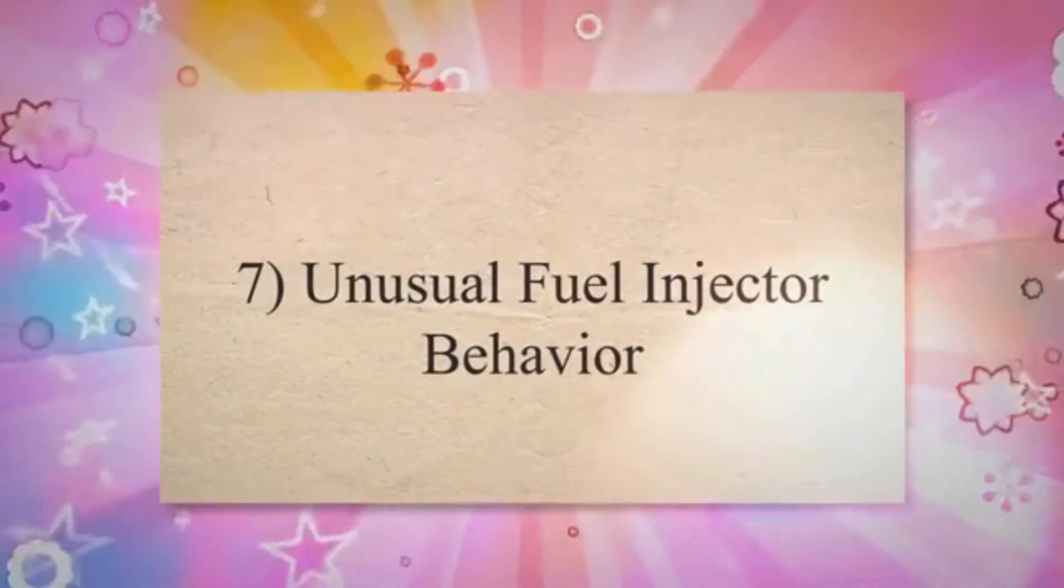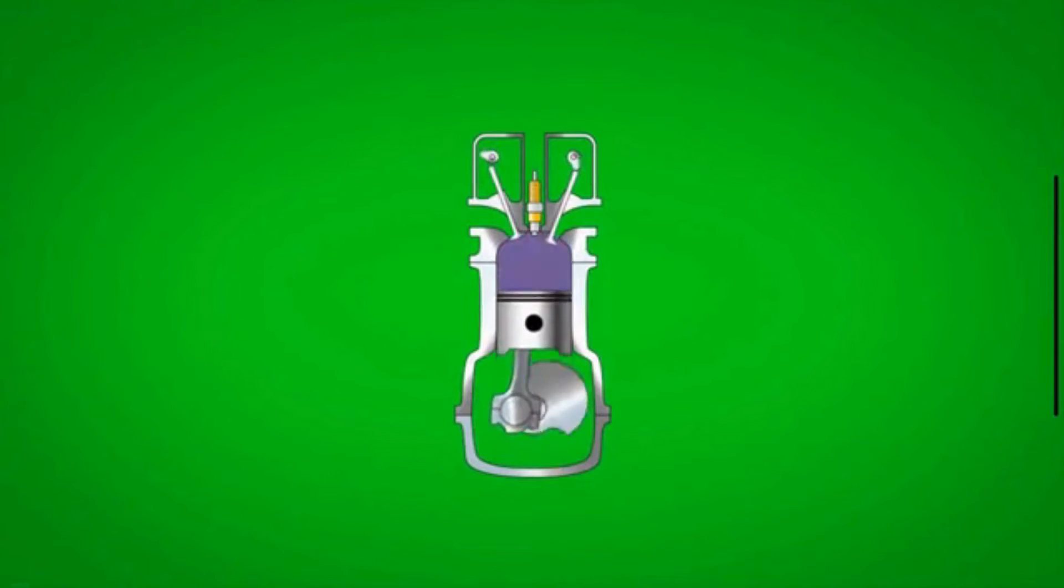Number 7: Unusual Fuel Injector Behavior. The ECM controls the fuel injectors, determining when and how much fuel is sprayed into the combustion chambers. If the ECM goes bad, it may result in improper fuel injection, affecting engine performance and combustion efficiency.